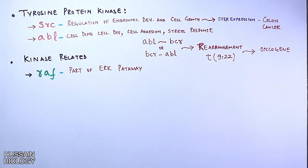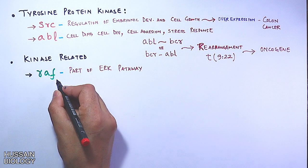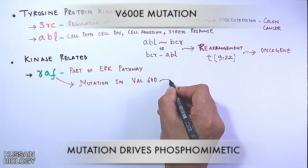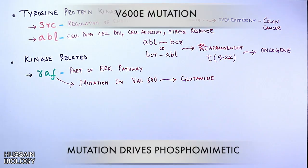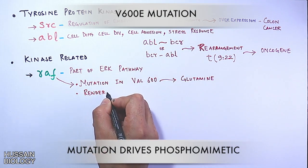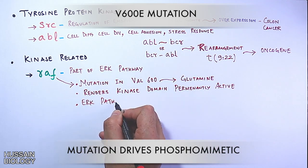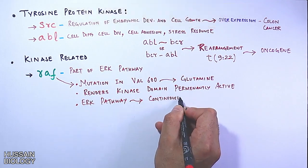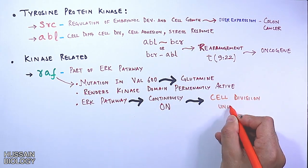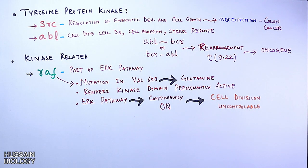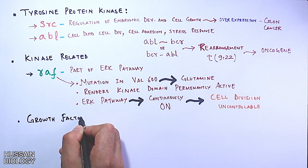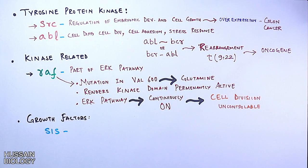Among kinase-related proto-oncogenes, RAF is part of the MAPK/ERK pathway. A mutation substituting valine at position 600 causes incorporation of glutamate, which renders the kinase domain permanently active, keeping the ERK pathway continuously on. This leads to uncontrolled cell division and ultimately cancer.